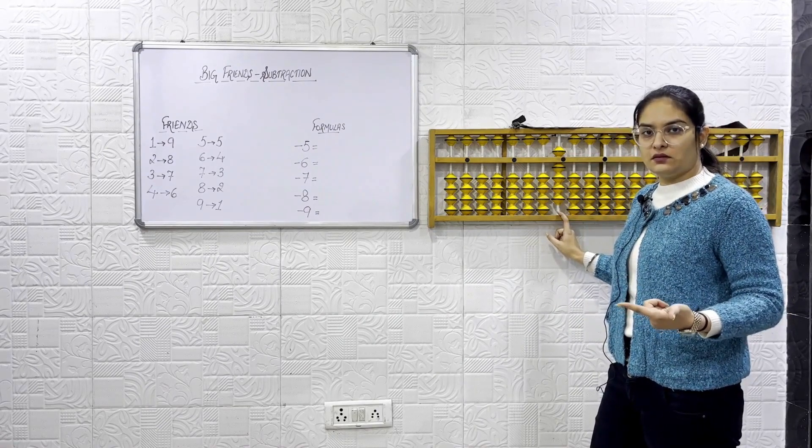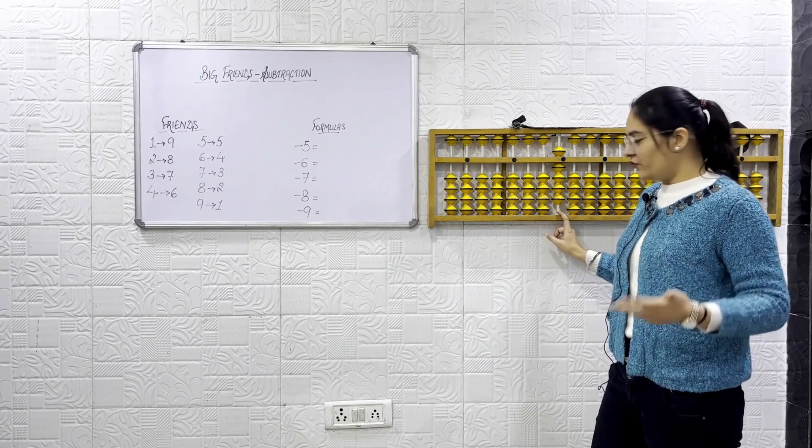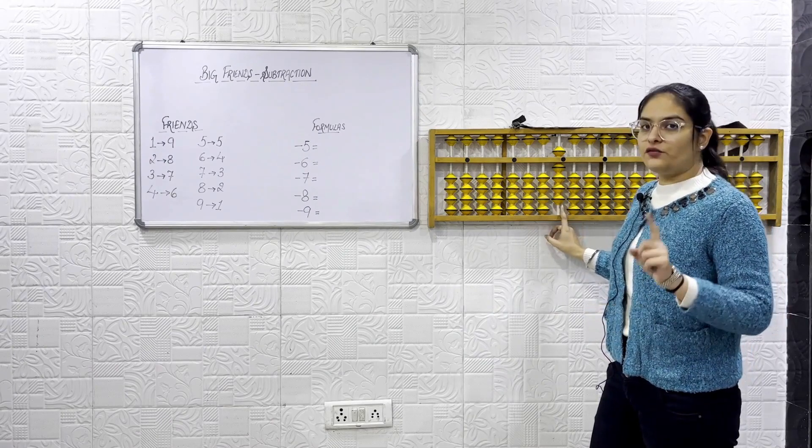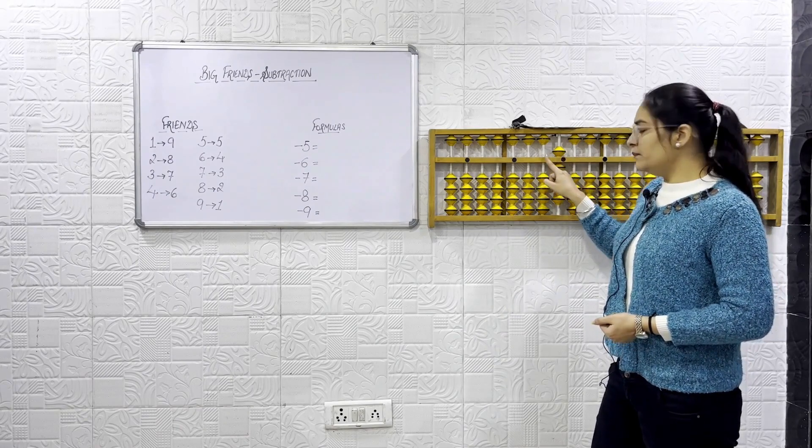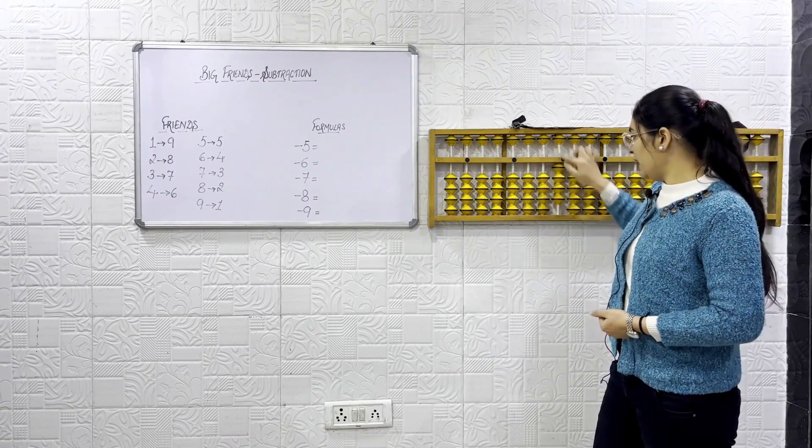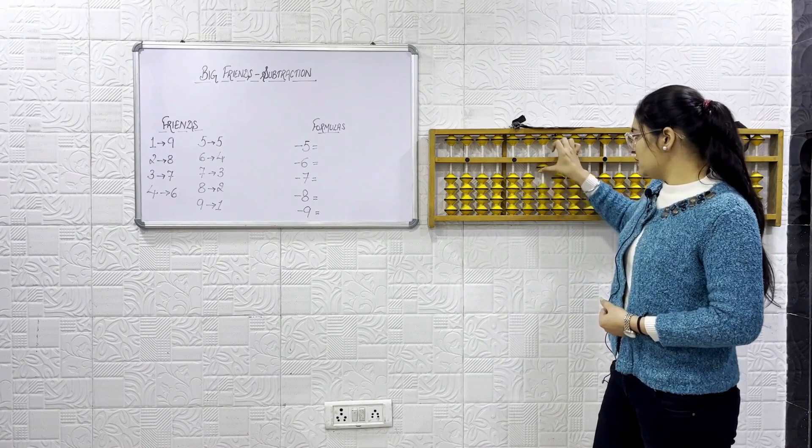Directly possible? Low small friends, low dead, big friends. What is the friend of 1? 9. So formula will be minus 9 plus 10.